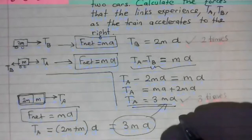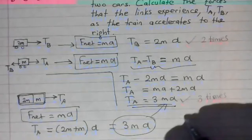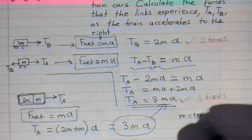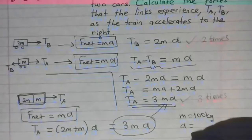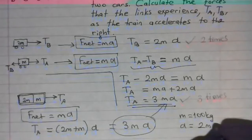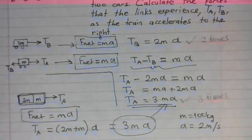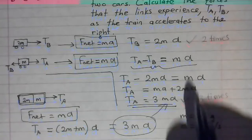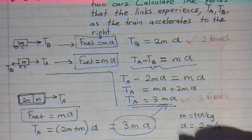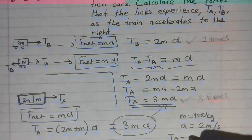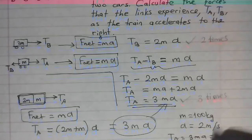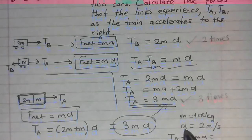If numerical values are given, let's say M is 100 kilogram, acceleration is 2 meters per second squared. TA now is 3 times M times A. So TA becomes 3MA, so that gives us 3 times 2 times 100,